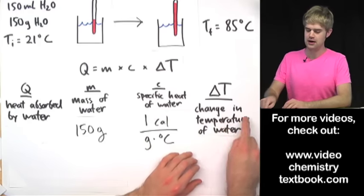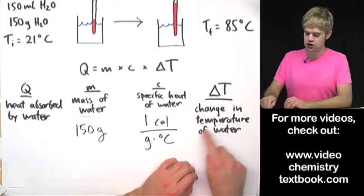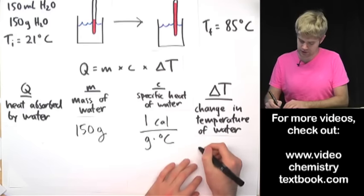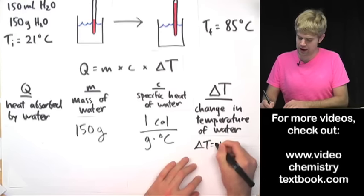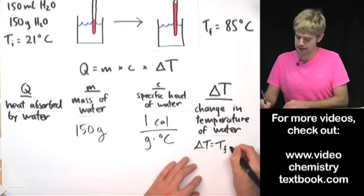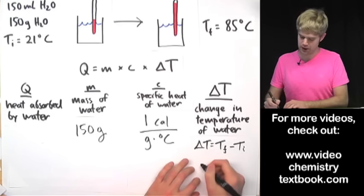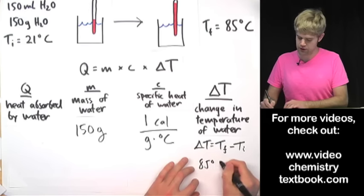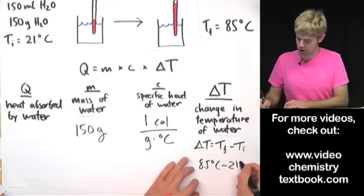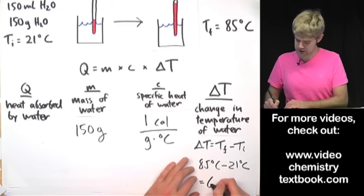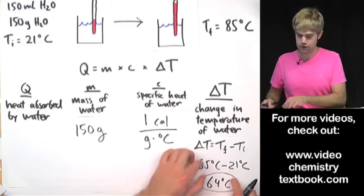Finally, delta T is the change in temperature of the water. To find delta T, we do the final temperature minus the initial temperature: 85 degrees Celsius minus 21 degrees Celsius, which gives us 64 degrees Celsius for our delta T.